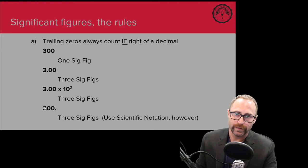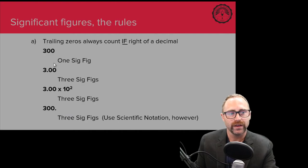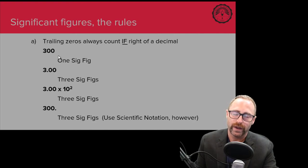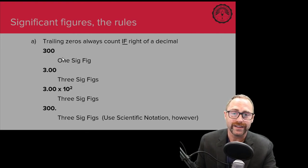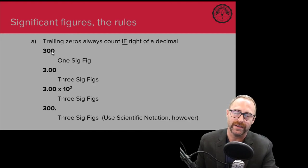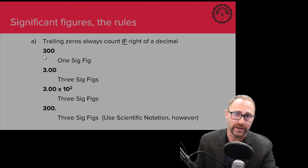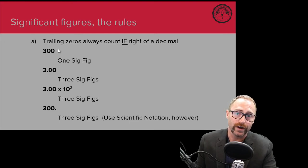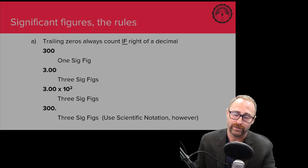Trailing zeros get a little granular in reasoning. Take the number 300: written out this way, 300, it is only going to have one significant figure. The zeros behind the 3 are trailing zeros. Unlike the previous example where we had a 3 in the ones place, now we don't have anything in the ones place — the last measurement we truly know is this 3 in the hundreds place. We have not written this number in a way that a reader can be certain whether there is anything in the tens or ones place.